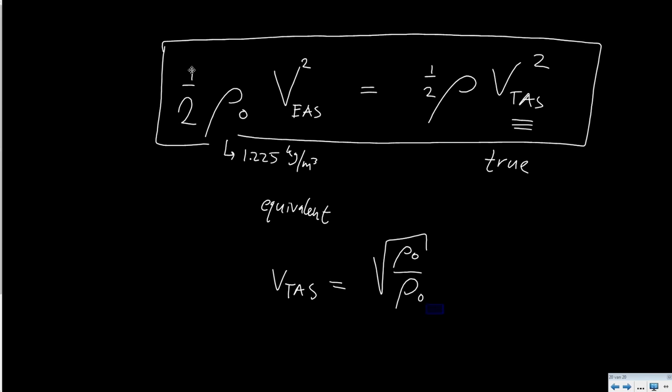or this should be the true one, I shouldn't use the index c here, like this, true times the equivalent air speed. This is a relation to convert the equivalent air speed as you can measure it to the true air speed.